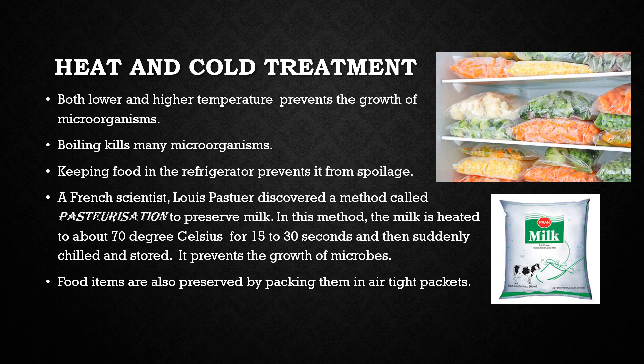Next is pasteurization. A French scientist named Louis Pasteur discovered this method, by which we can preserve milk — especially in big milk dairies. In this method, milk is heated to about 70 degrees Celsius for 15 to 30 seconds to kill most of the bacteria present in it. This hot milk is then cooled very quickly to a lower temperature to prevent any remaining bacteria from growing further, and then stored in refrigerators. Pasteurized milk can be consumed without boiling because it is free from harmful microorganisms, and milk in packets does not get spoiled for a fairly longer time.